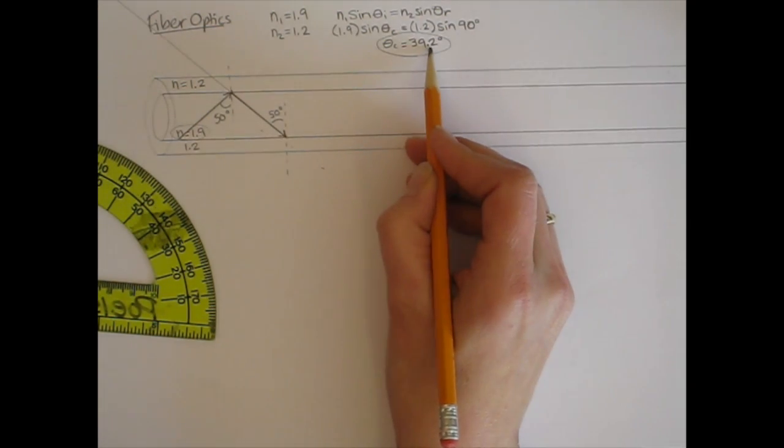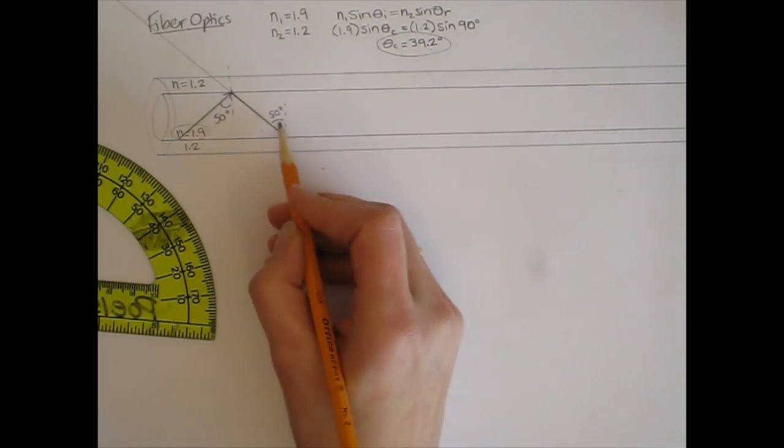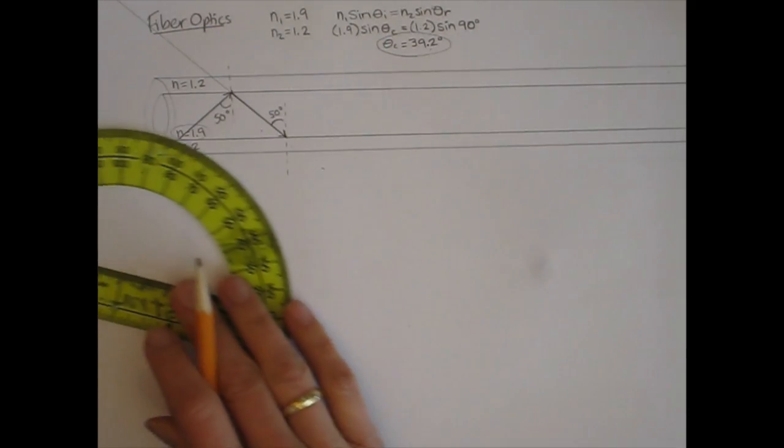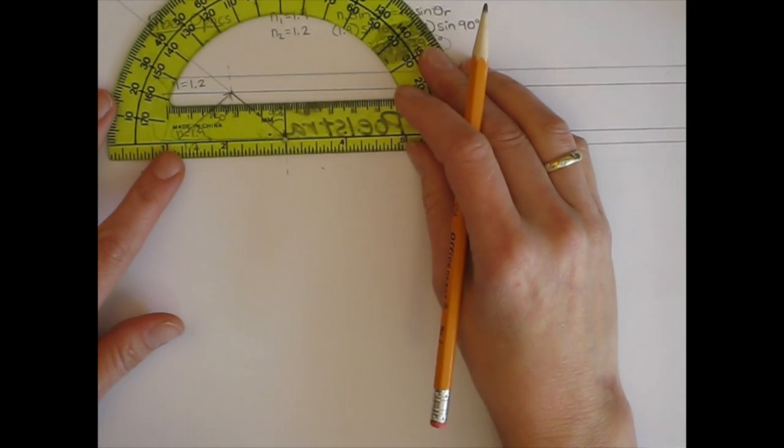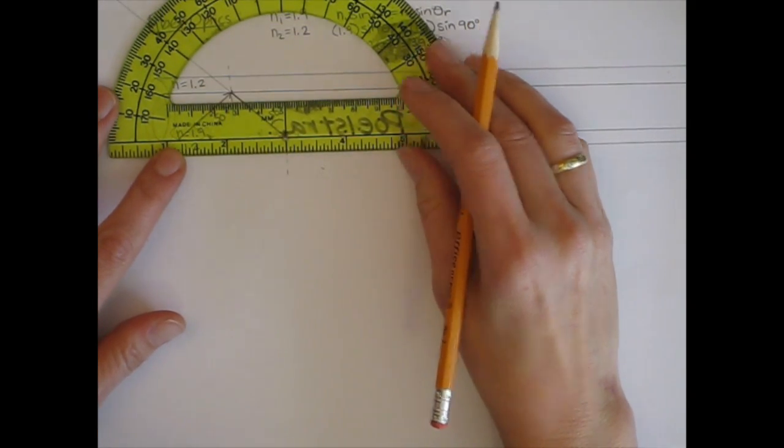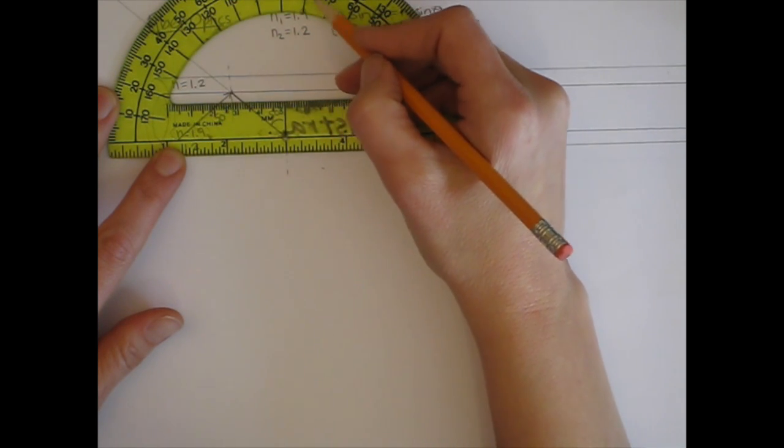So the critical angle is still 39.2. And since our incident angle is larger than 39.2, we have total internal reflection occurring again at 50 degrees.